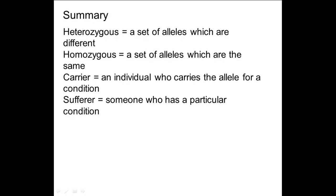In summary: heterozygous means a set of alleles which are different — in this case big E, small e. Homozygous means a set of alleles which are the same — for example big E, big E or small e, small e. A carrier is an individual who carries the allele for a condition but doesn't have it themselves — they would be heterozygous, big E, small e. And a sufferer is someone who has a particular condition — in this case, small e, small e.